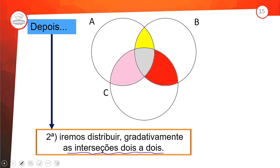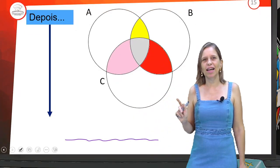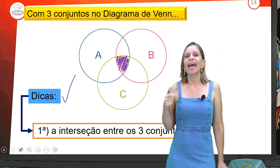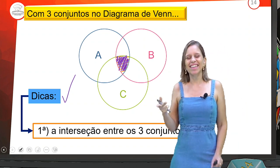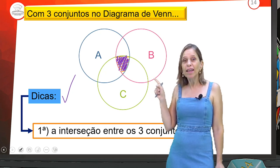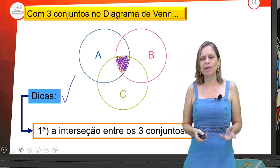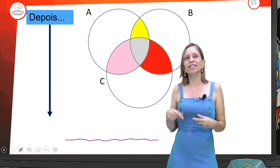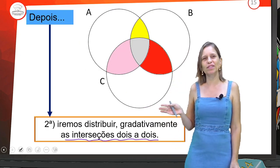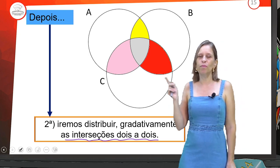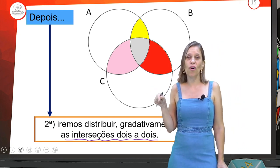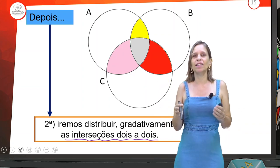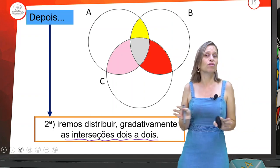Olha como funciona: começamos com a interseção dos três — o que tem em A, E em B, E em C ao mesmo tempo é o nosso miolinho. A gente começa na distribuição dos elementos sempre de dentro para fora, sempre pela interseção. Depois, no segundo momento, temos as demais interseções — gradativamente de dois em dois: A com B (amarelinho), A com C (rosa), B com C (vermelho). O foco com o diagrama de Venn é resolução de problemas.